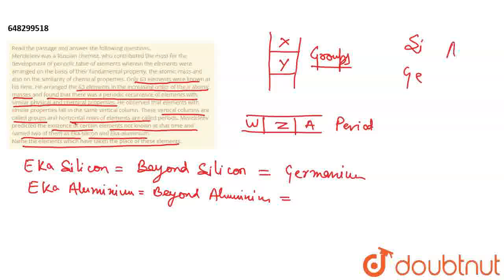Beyond Aluminium मतलब Aluminium के नीचे वो होता है Gallium. Eka Aluminium वो है Gallium.